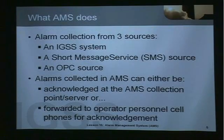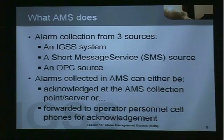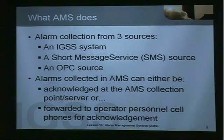What does AMS do? Alarm collection occurs from three different sources: one source being an IGSS system, another source a short message service SMS source, or even an OPC source. Alarms collected in AMS can either be acknowledged at the AMS collection point or server, or forwarded to operator personnel cell phones for acknowledgement there.